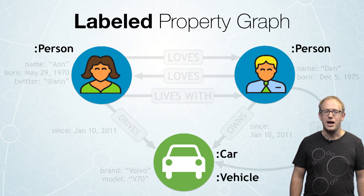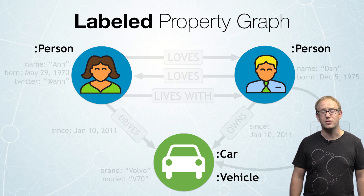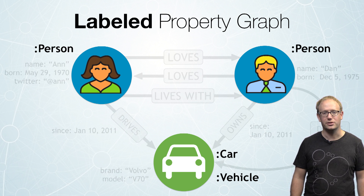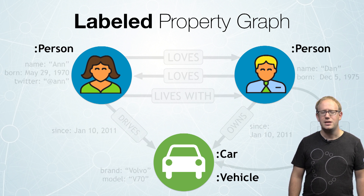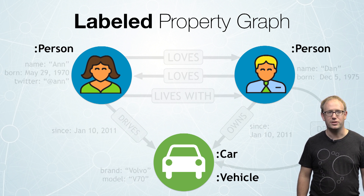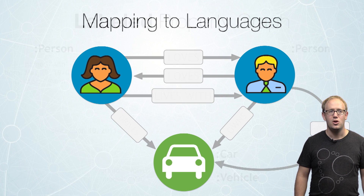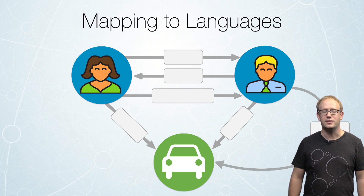We've reviewed now our nodes, our relationships, the properties on each of the nodes and relationships, as well as the labels on the nodes. Now, how does this map to the English language? Well, quite easily.